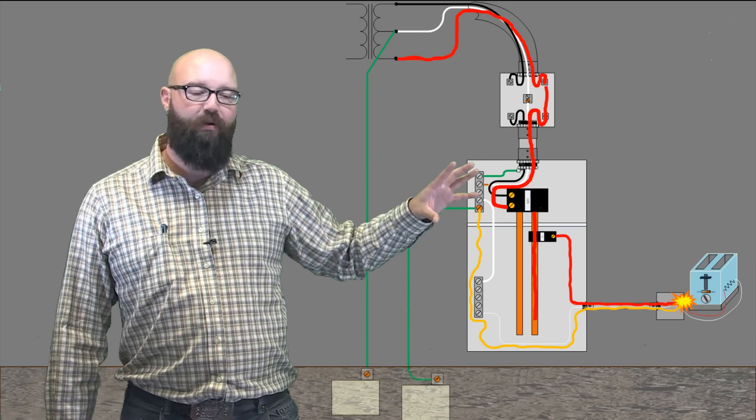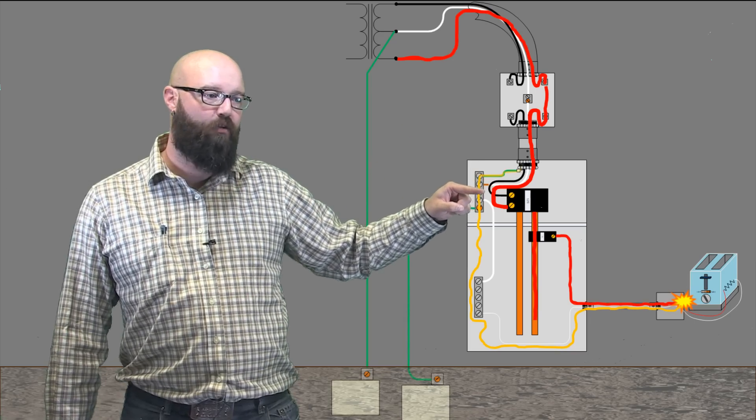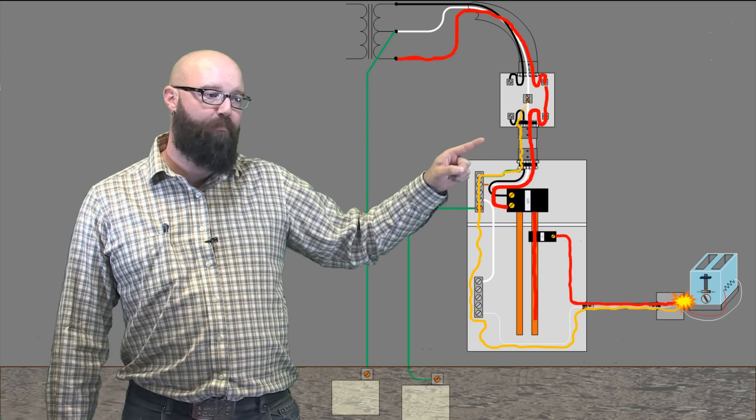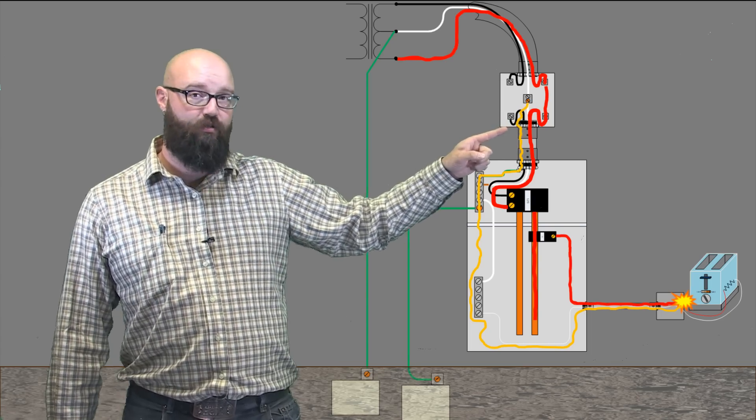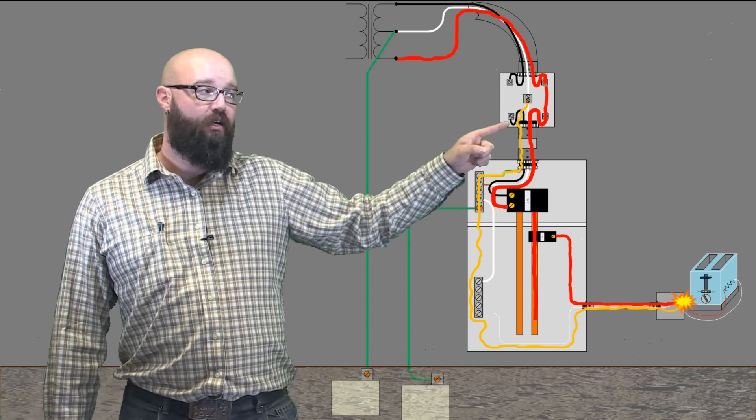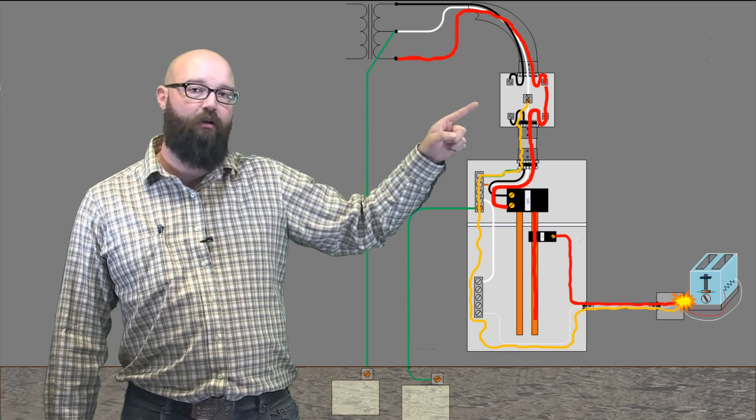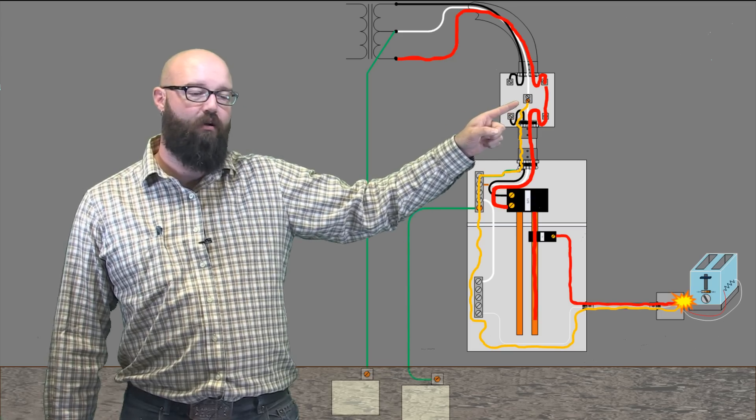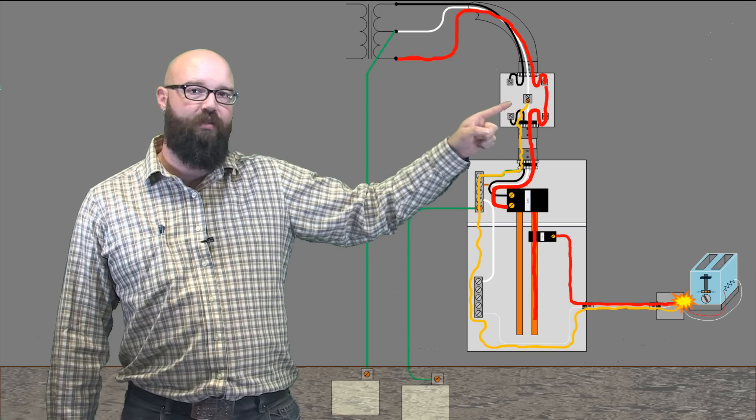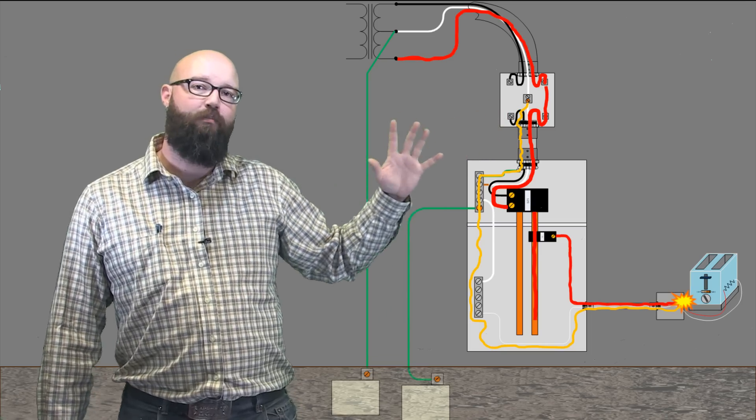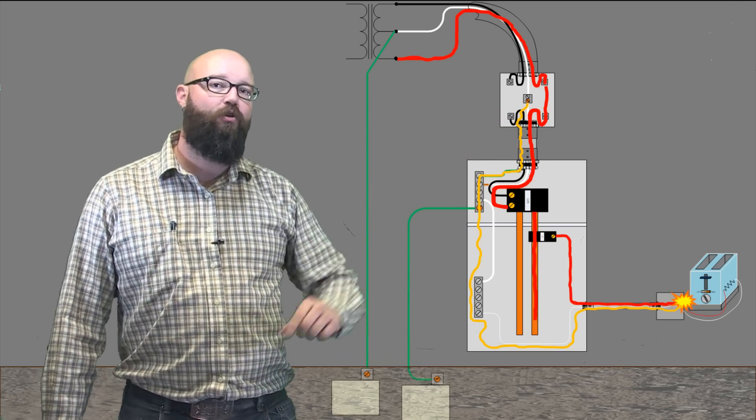Right now, if this path is intact, that fault current is going to make its way up the grounding bar, up that conduit, that service raceway, which is metal, which is attached to this metal meter base, which if you notice right here, we have another brass screw. And the intent of that brass screw is to bond our meter base to our neutral conductor.